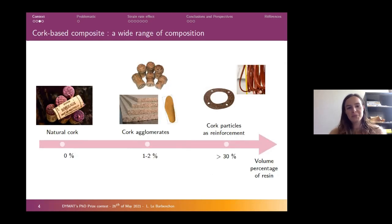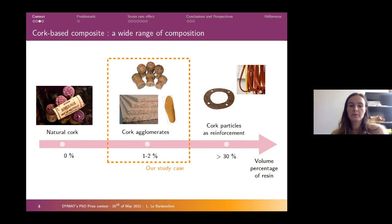There are a lot of cork-based composites. The one that we know a lot in Bordeaux is natural cork for wine bottles, but cork can also be present as small particles for reinforcement and energy absorption devices. Here we were interested in cork agglomerates, which are mainly made of cork particles attached to each other with a very small amount of resin.